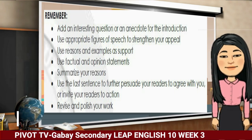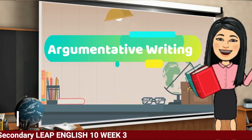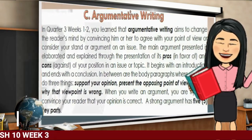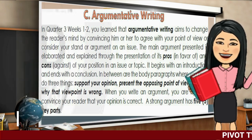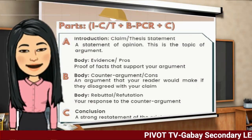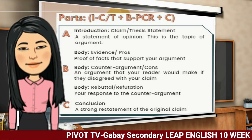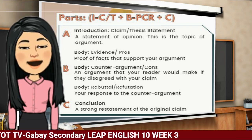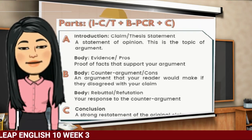Remember the following points in writing a persuasive essay. The last one is argumentative writing. In Quarter 3, Weeks 1 and 2, you learned that argumentative writing aims to change the reader's mind by convincing him or her to agree with your point of view or consider your stand or argument on an issue. A strong argument has five key parts: first, the introduction, which contains the claim or thesis statement; then the body, which consists of the evidence or pros, stating the counter-argument or cons, and the rebuttal or refutation; and lastly, the conclusion.